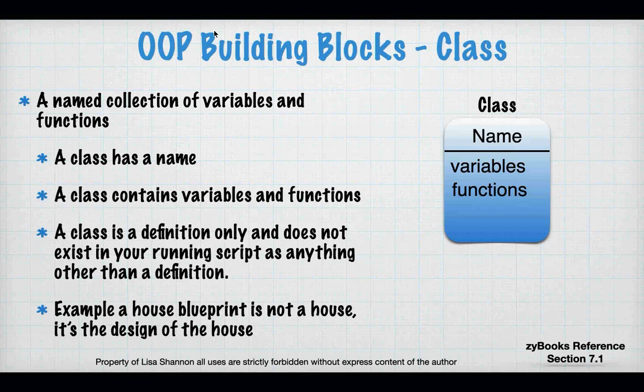A class contains variables and functions. A class is a definition only — it doesn't really exist. Just like when we first did functions with `def`, Python skipped that code until we actually called it by name. The same thing with a class: it's a definition, and it doesn't exist in any way that I can access it in the code until I create an object from it using very specific syntax.